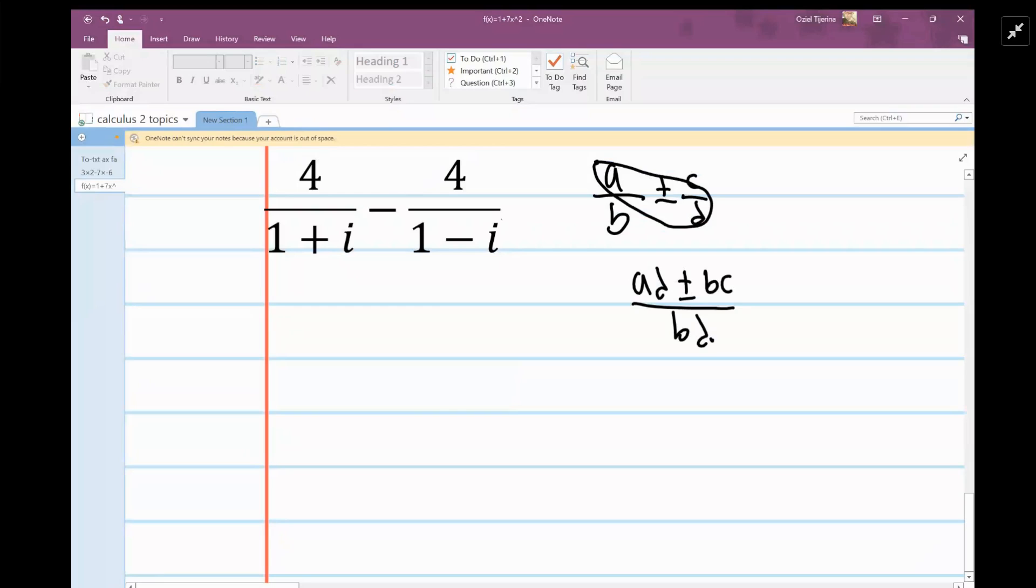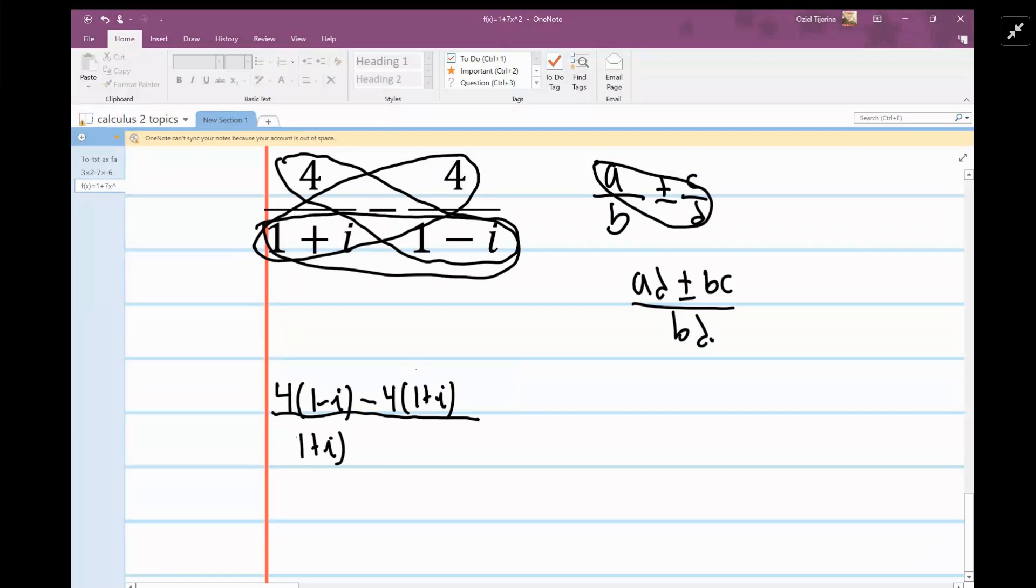So 4 times 1 minus i, and then you're going to say minus 4 times 1 plus i. And then on the bottom you're going to multiply these two, so 1 plus i times 1 minus i.